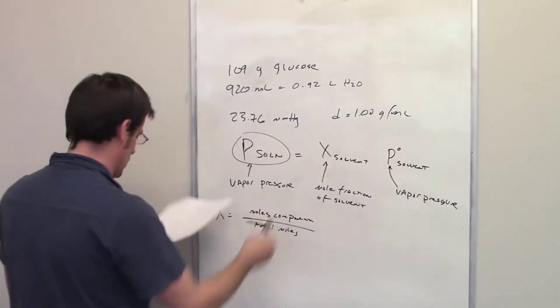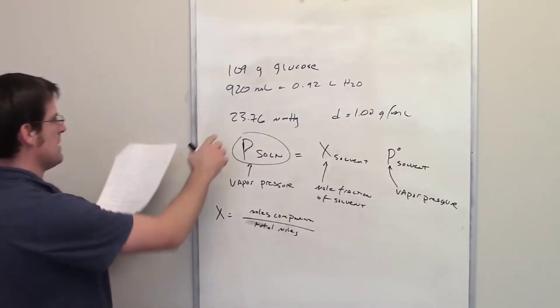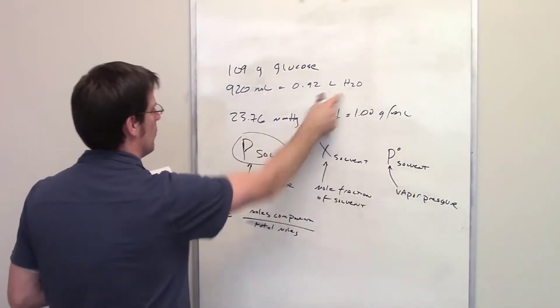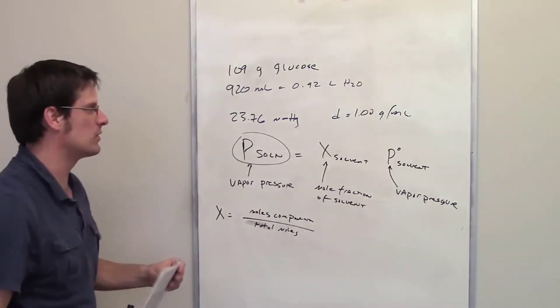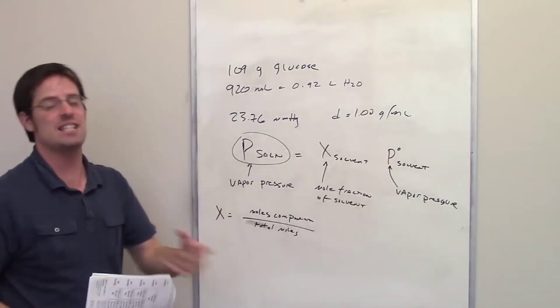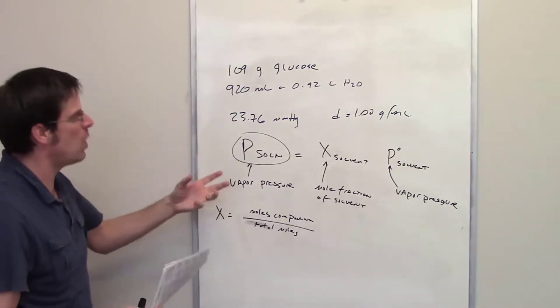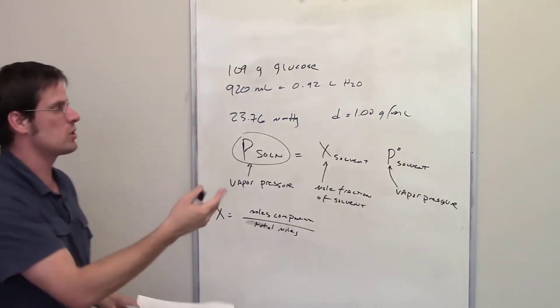So we need to determine X by remembering that we've got 0.92 liters of water and 109 grams of glucose. We first need to determine the total number of moles that each of these values corresponds to.